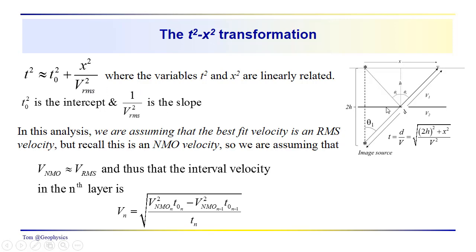Now in this particular case with a single layer problem, the RMS velocity is equal to the interval velocity, but only for that case. So T0 is the intercept and 1 over V RMS squared is the slope. We're assuming that the RMS velocity is a best fit velocity and it's an approximation of the NMO velocity, so the NMO is approximately equal to V RMS, so that we have an interval velocity relationship for the nth layer which we derived earlier last time in this form.